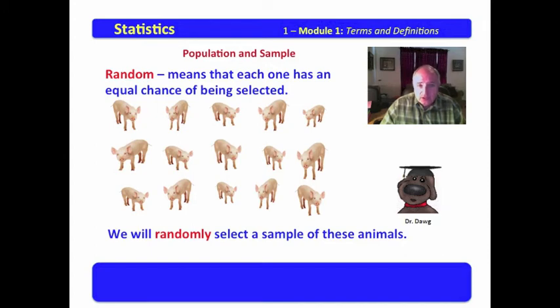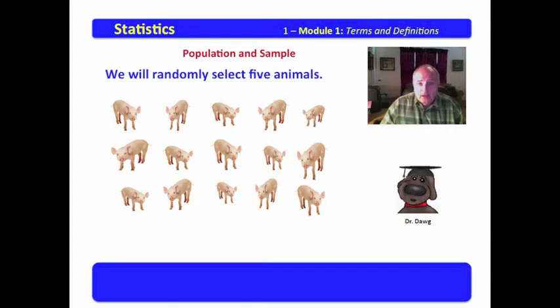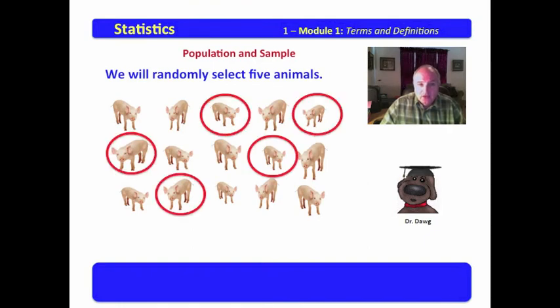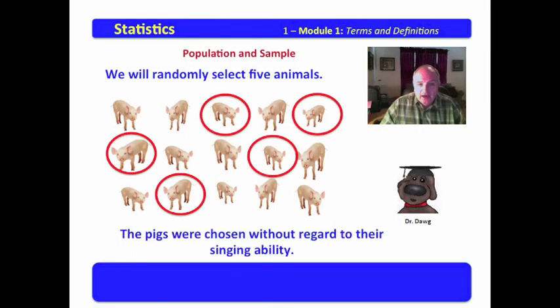In other words, when we go to select a sample, we will do it randomly, which guarantees us that one of these pigs is not favored above another. We will randomly select five animals. We will turn it loose and let the computer pick them for us. There we go. Oh, now we have a random sample of five pigs.